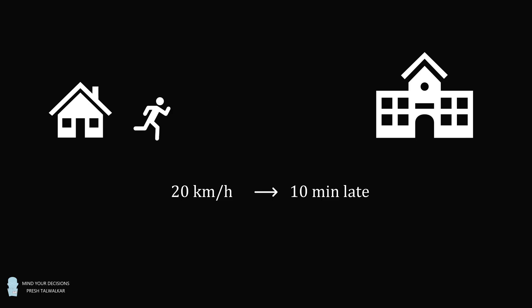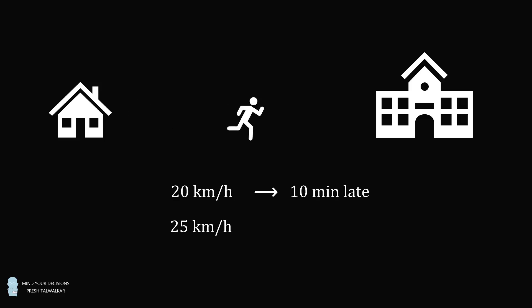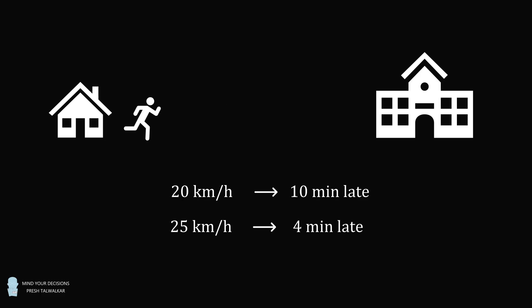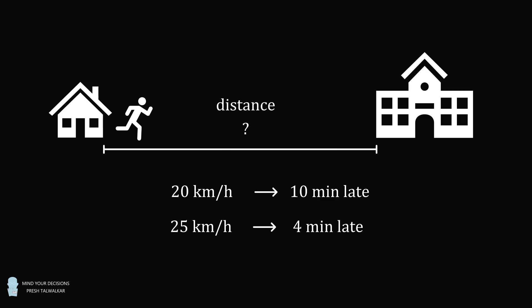The next day, he vows that he's going to wake up on time. But alas, he wakes up late again and says he needs to go even faster. So he makes an average speed of 25 kilometers per hour to get to the college, but he still ends up 4 minutes late. The question is, based on this information, what is the distance from his home to his college?